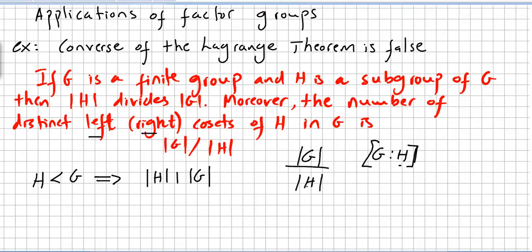Now, the question is, the theorem says if H is a subgroup of G, the order of H will divide the order of G. Now we are checking here, if a certain number divides the order of G, is that true? That there will be a subgroup H such that it will divide the group G. Is this true or not?